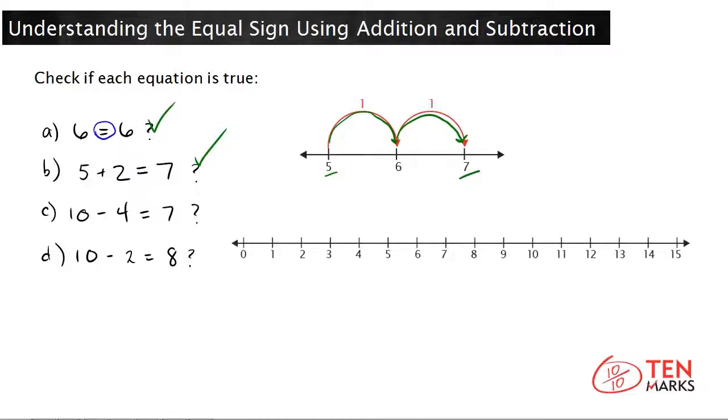Start at 10 and count back by 1's until you get to 4. Count the number of times you had to hop. 1, 2, 3, 4, 5, 6. This means that 10 minus 4 equals 6. 6 does not equal 7. 6 is less than 7. This equation is not true.